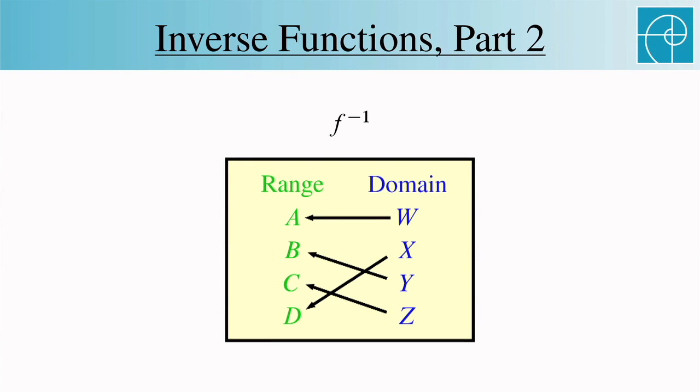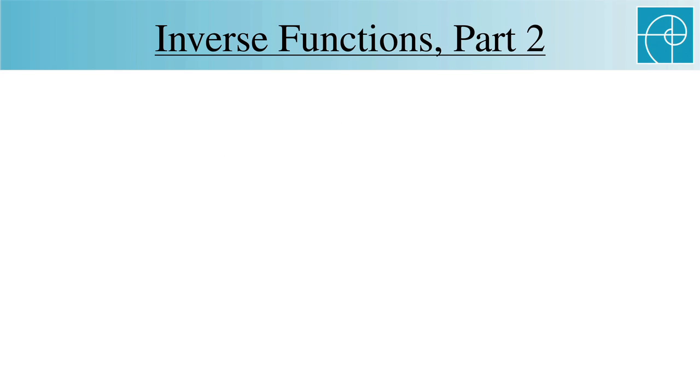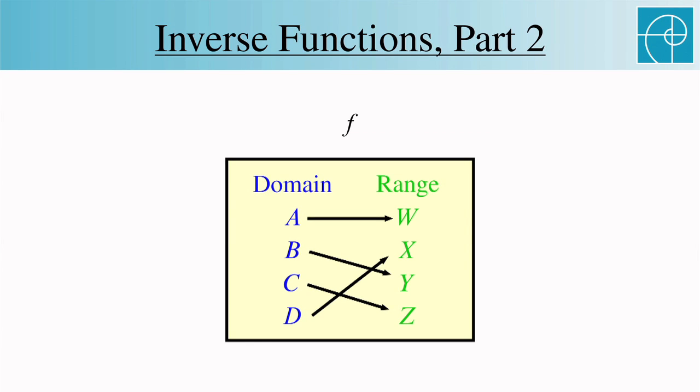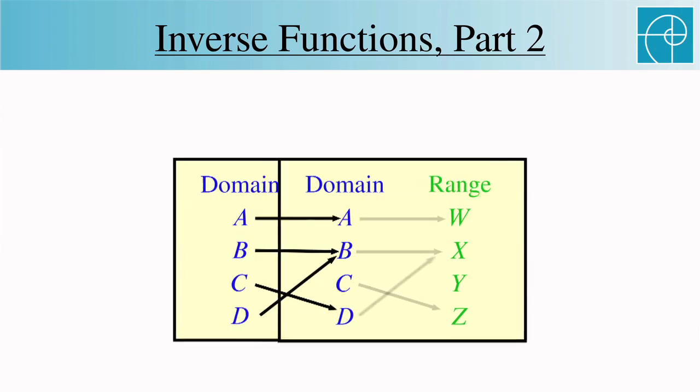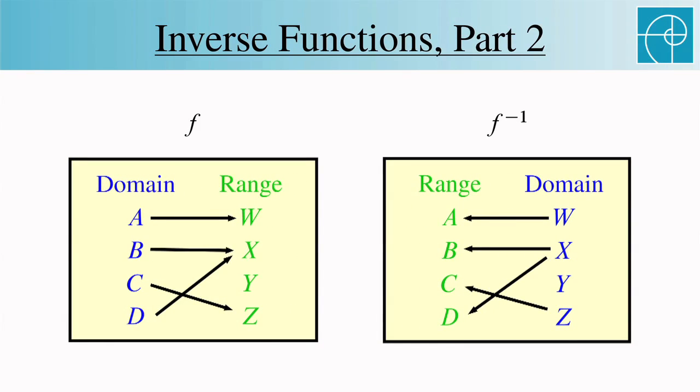But there's a problem, because this doesn't always result in a function. Let's go back to f and move the arrow coming out of b so it points to x instead of y. Now look at what happens when the arrows are reversed. We don't get a function, because now x has two arrows coming out of it, and a function must assign a single element of the range to each element of the domain. The problem then is that we have two elements being associated to x, not just one.